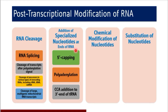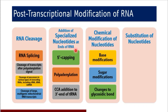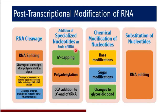Then coming to chemical modifications of nucleotides, you will see that there are three major chemical modifications: one is base modification, next one is sugar modification, and third one is changes made to the glycosidic bond in nucleotides. Then the fourth type is substitution of nucleotides — the large RNA molecule is cleaved to form shorter sequences of RNA which will itself act as different RNA, and this is the mechanism of RNA editing.